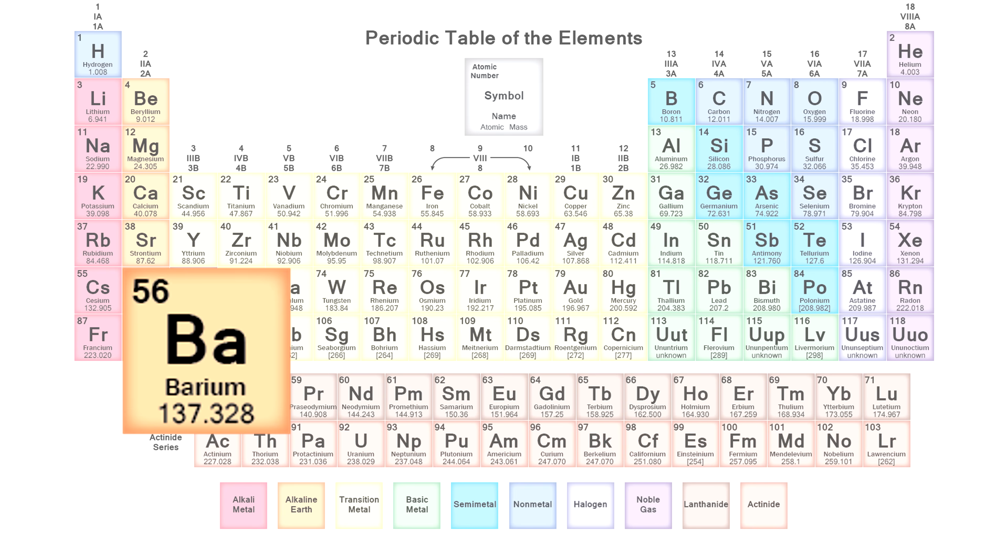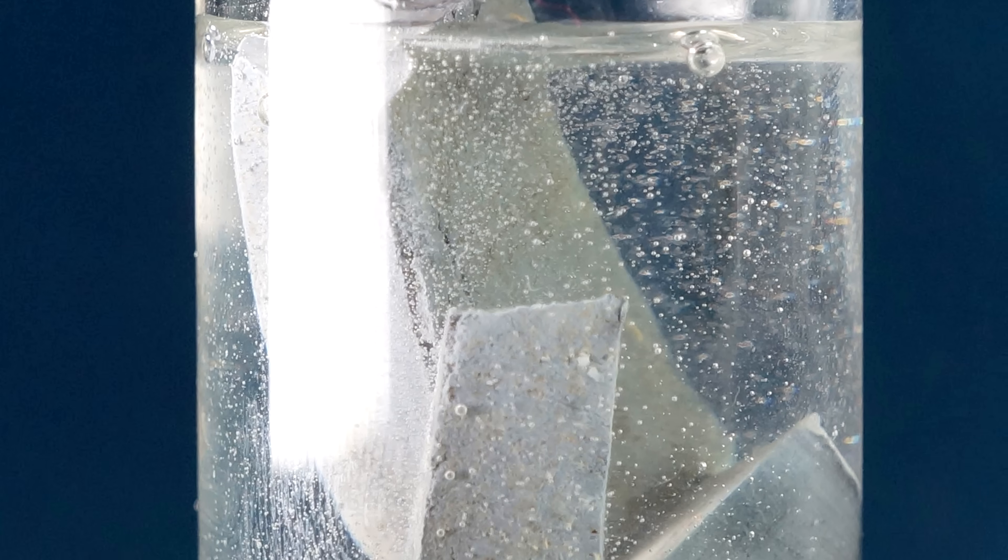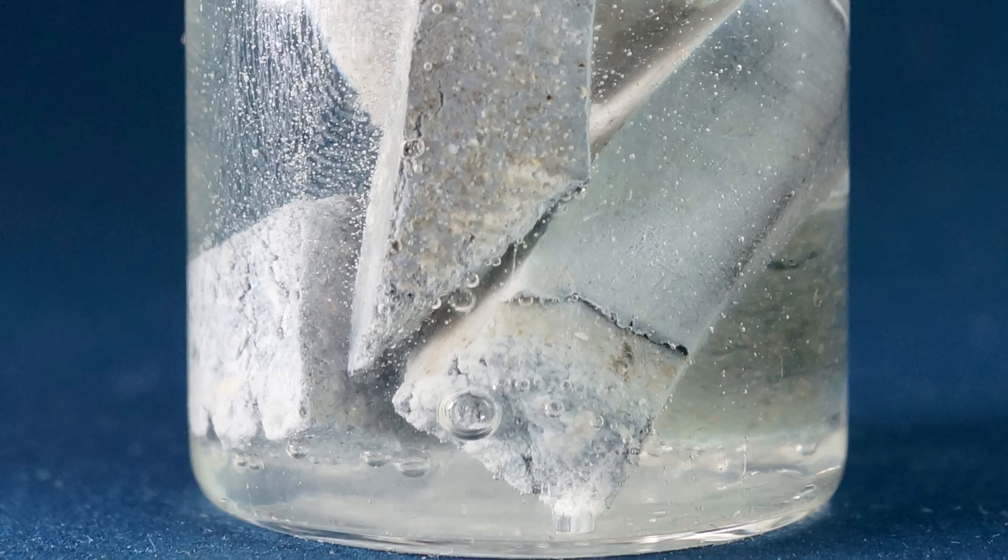It is located near the bottom of the second group in the table of chemical elements. Like many active metals, to protect it from corrosion, barium is stored in either mineral oil or kerosene.